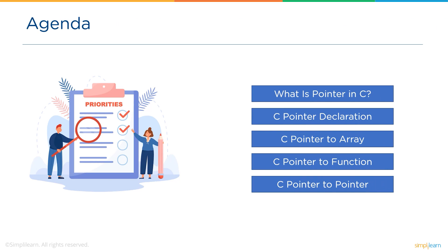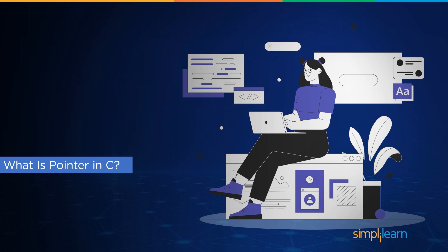This session will help you to understand: what pointers in C are, next pointer declaration, then we'll understand the pointer to an array, followed by a pointer to function, and finally a pointer to pointer. Now let's get started.